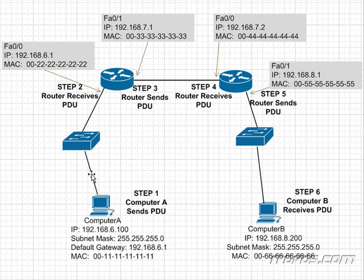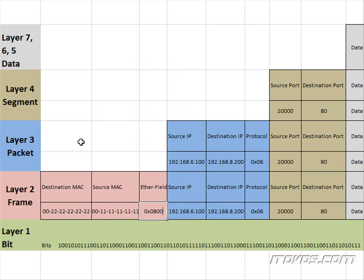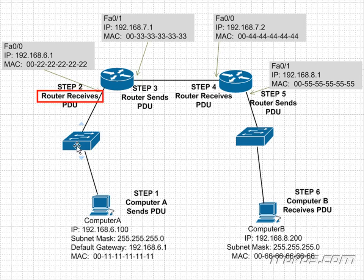Step 1 is done. We're sending our bits over and they're going to hit the switch that Computer A is connected to. The switch is going to take a look at the frame and see what the destination MAC address is, because a switch works at Layer 2. The switch is going to get all these bits, reassemble the frame, and look at the destination MAC address — 00-22-22-22-22-22 — then look in its MAC address table to see which port to send the frame out on. If the switch has the destination MAC address in its MAC address table, it knows which port to send it out, and the frame will make its way over to our default gateway.